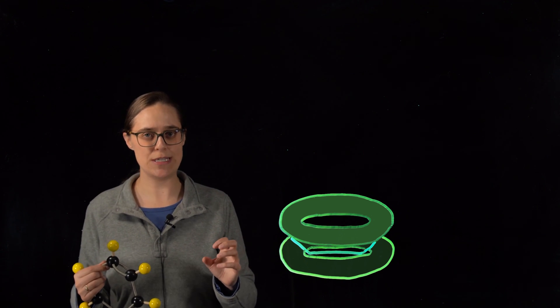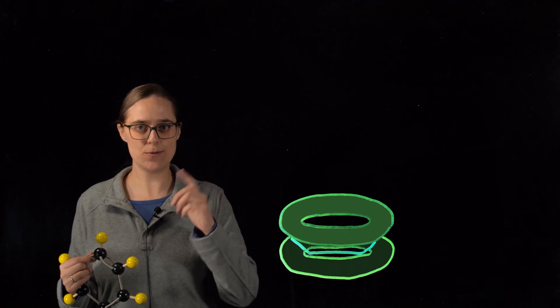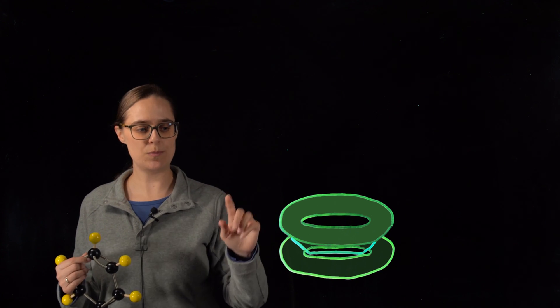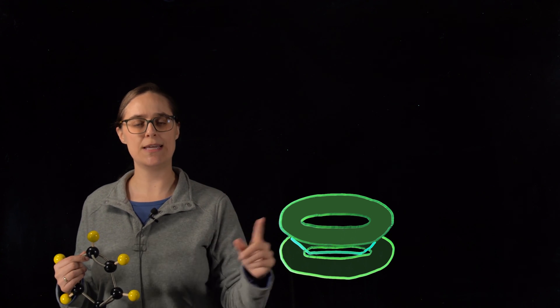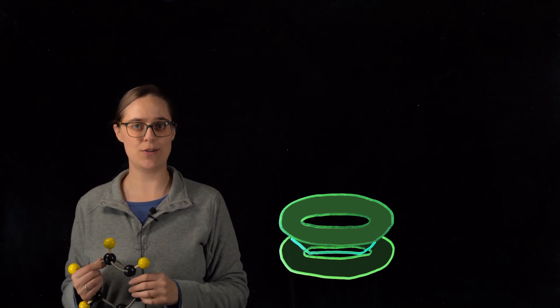So in Kekulé's dream, when he was talking about a snake biting its own tail and spinning, he was picturing these orbitals and electrons spinning around the entire ring.